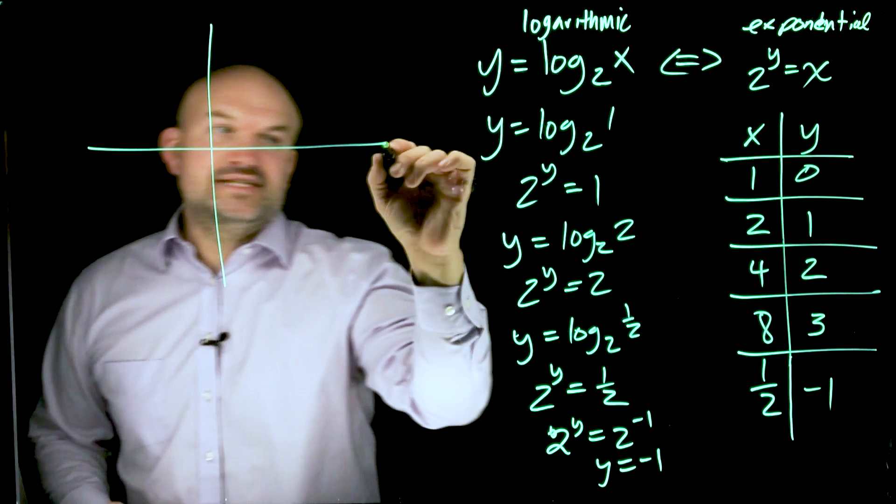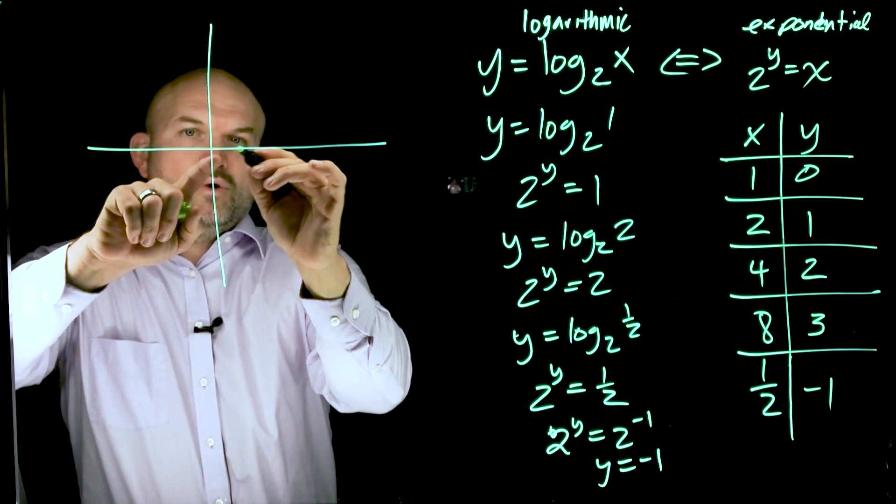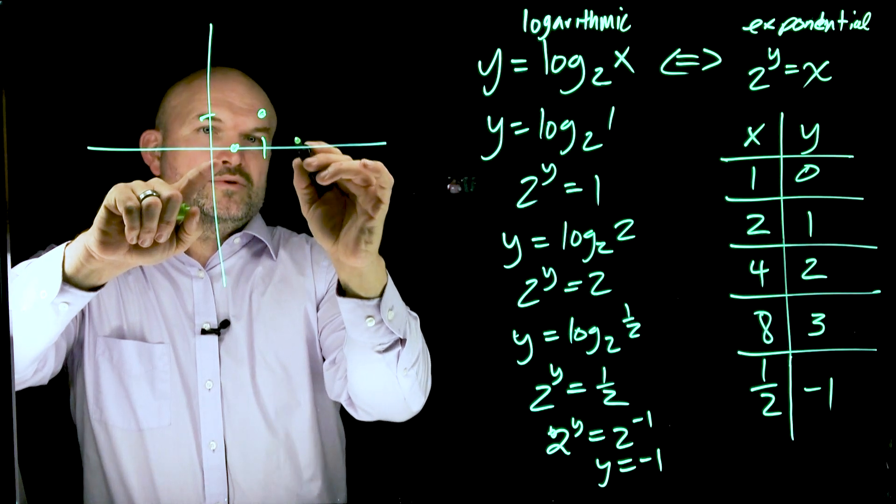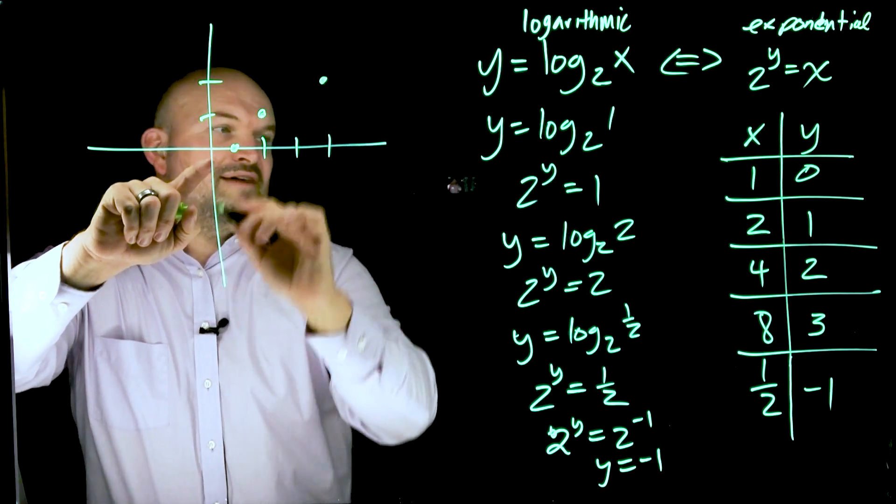Now let's go and graph these values here on the graph. So I have 1 comma 0, I have 2 comma 1, I have 4 comma 2.